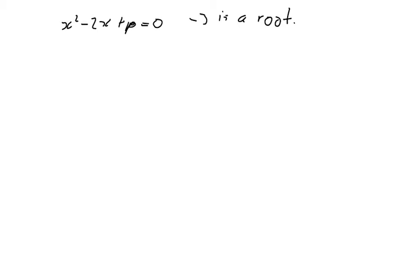In this video we're given a quadratic equation x² - 2x + p = 0, but given that -3 is a root, we're asked to find what p is and to find out what the other root is.